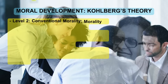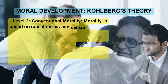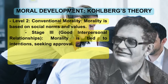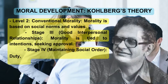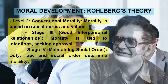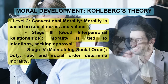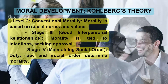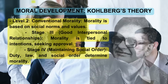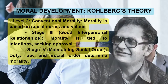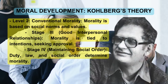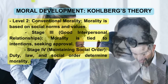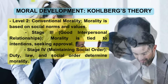Level 2 is Conventional morality, where morality is based on social norms and values. Stage 3 involves good interpersonal relationships — morality is tied to intentions and seeking approval. Stage 4 is maintaining social order, where duty, law, and social order determine morality.